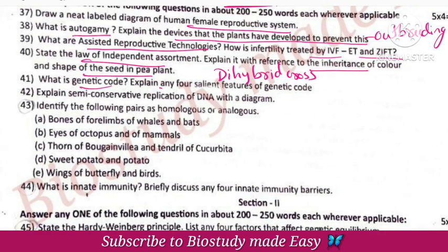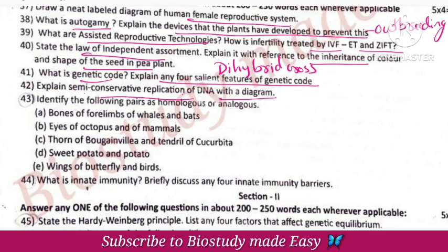Genetic code — that is 4 salient features. Semiconservative replication of DNA with diagram — this covers DNA replication.